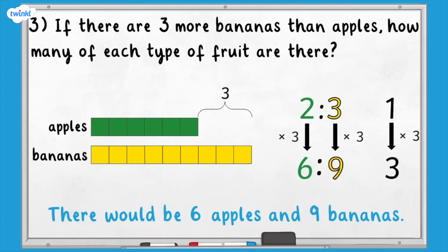You can see how we can use representations to help us solve ratio problems. Remember, the relationship is a multiplicative one, which means we can only multiply or divide, not add or subtract. Now it's your turn. If you find it helpful, you could use one of the representations we've looked at, or you might just want to use the abstract methods.